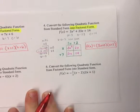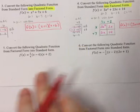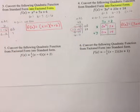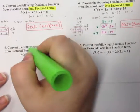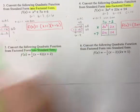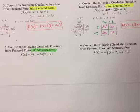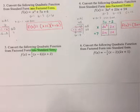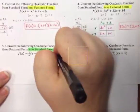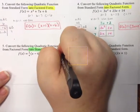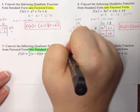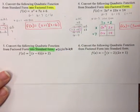For the next two problems, we're going to convert quadratic functions from factored form into standard form. Into standard form means we're not factoring — we're doing the opposite of factoring. Factoring is division, so the opposite would be multiplication. We're going to distribute.